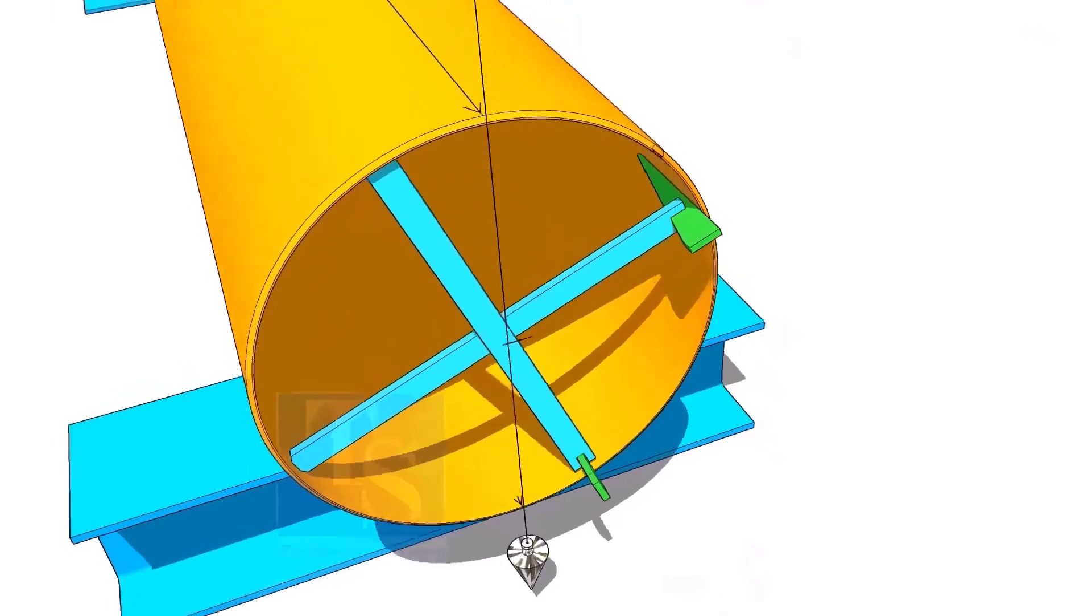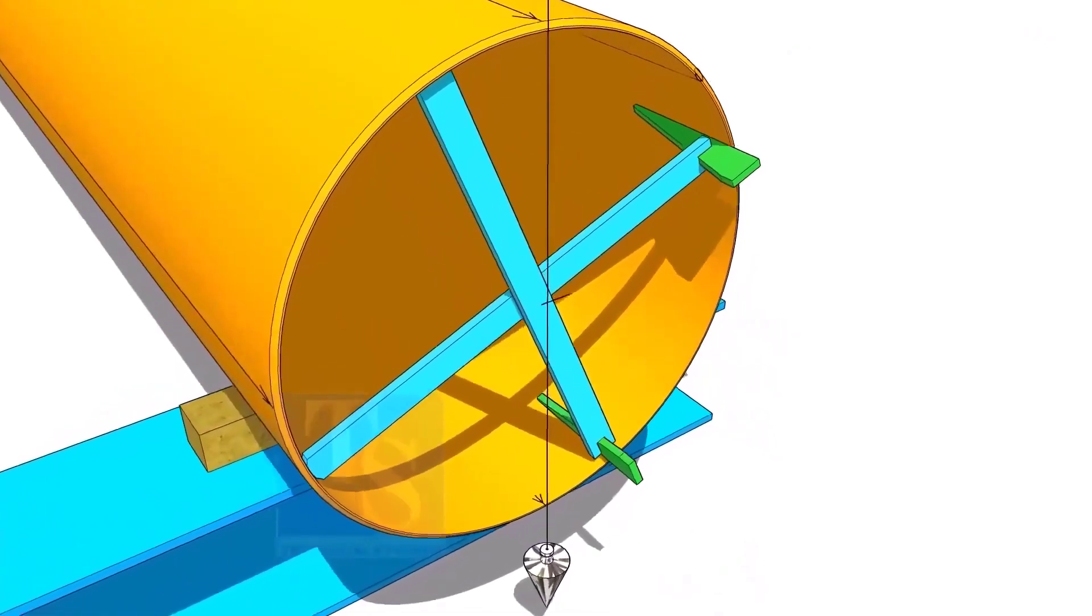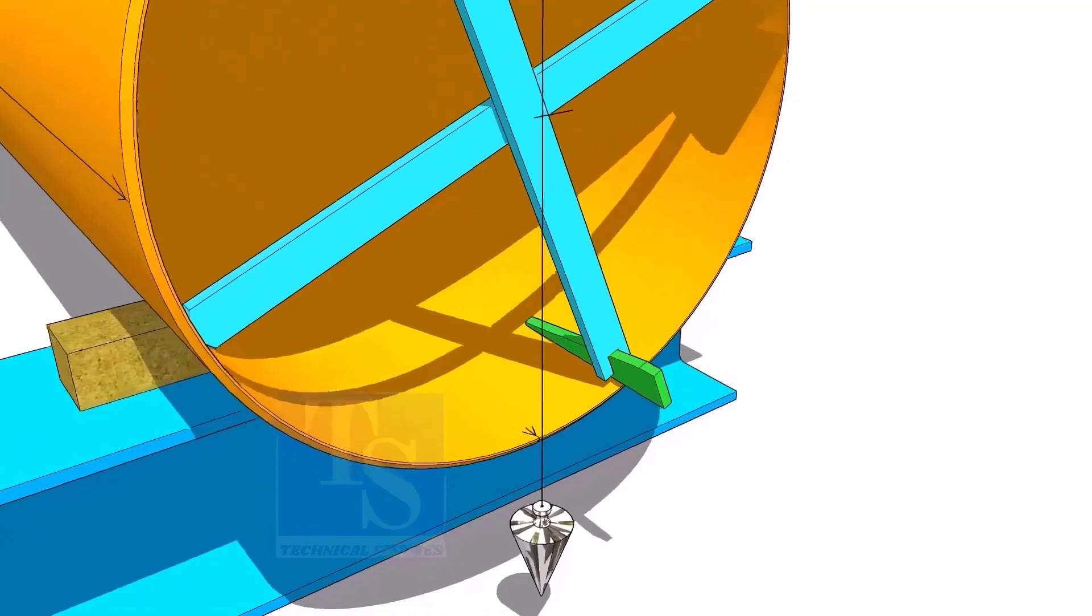Put the plumb on the top side line. If the string passes through the line on the bottom, the lines are correct.